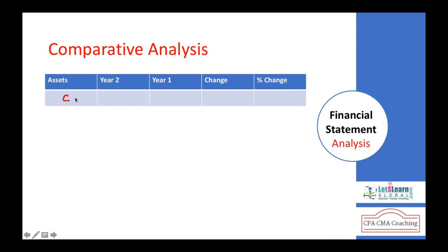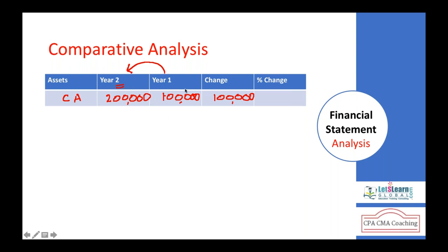For example, if current assets in Year 2 are 200,000 and in Year 1 were 100,000, then current assets increased by 100,000 extra. There should be a reason for this increase. In comparative analysis we compare current period information with last period information and find out the change.